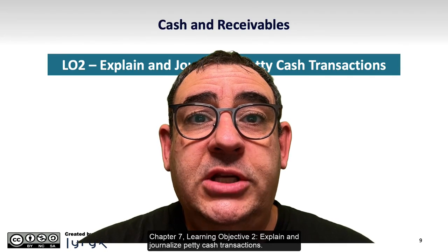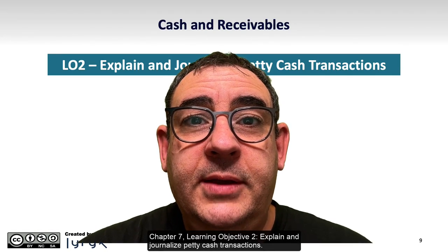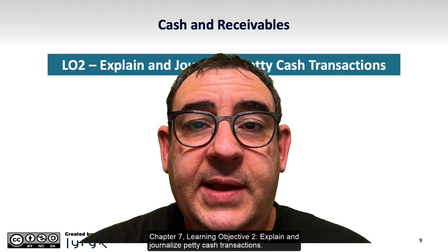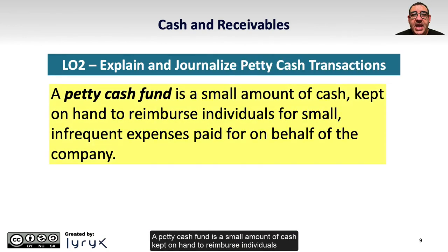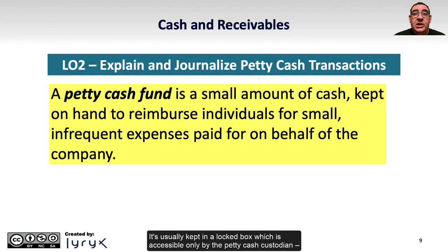Chapter 7, Learning Objective 2: Explain and Journalize Petty Cash Transactions. A petty cash fund is a small amount of cash kept on hand to reimburse individuals for small, infrequent expenses paid for on behalf of the company. It's usually kept in a locked box which is accessible only by the petty cash custodian — the individual who is responsible and accountable for the fund.